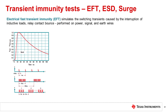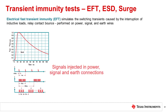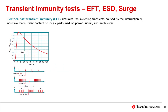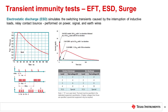EFT, or Electrical Fast Transient Testing, simulates the switching of inductive loads in the real world, such as interruption of inductive loads or relay contact bounce. The tests performed inject a specific pulse profile of defined duration and amplitude into power, signal, and earth wires of an isolator, either through direct or capacitive coupling. There are different profiles of EFT pulses for different standards, as the pulse waveform is defined by IEC 61000-4-4 using the pulse profile shown here. Isolators with poor EFT performance may exhibit bit errors, reset, or damage to surrounding hardware.